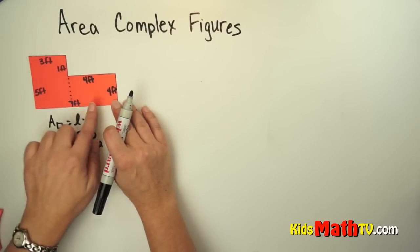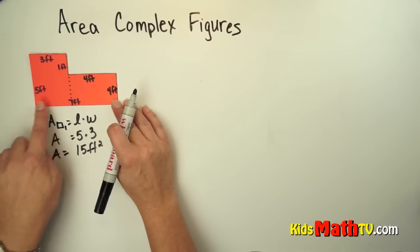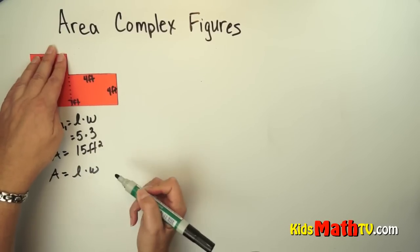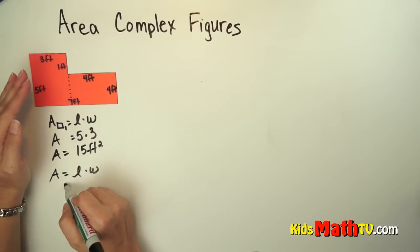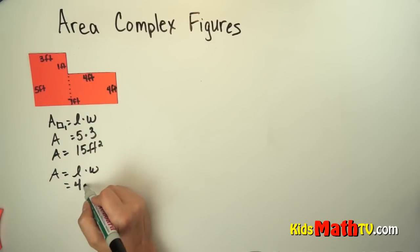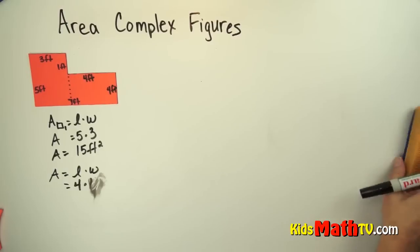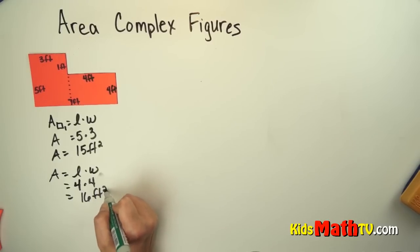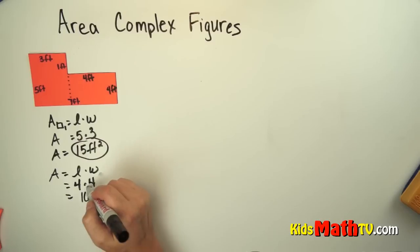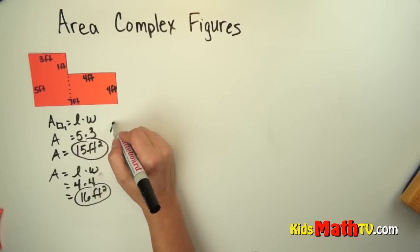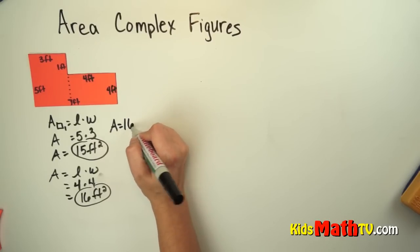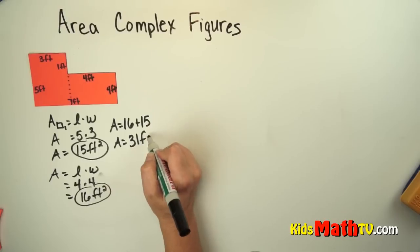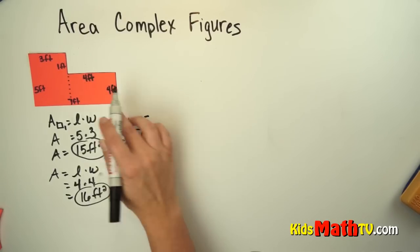Now I have to find this rectangle. I am not going to use the 7 because that is the length of the entire shape — I just want this length. So we are going to do area equals length times width. In this case the length is 4 feet and the width is also 4 feet. So 4 times 4 equals 16 square feet. Now we have 15 square feet for the first rectangle and 16 square feet for the second. Adding them together, the area equals 16 plus 15, which gives us a total area of 31 square feet for the whole figure.